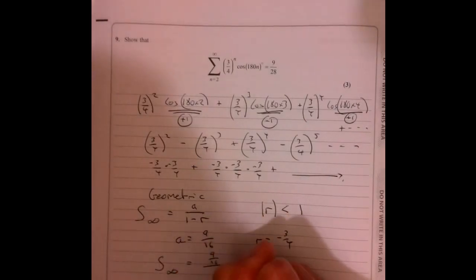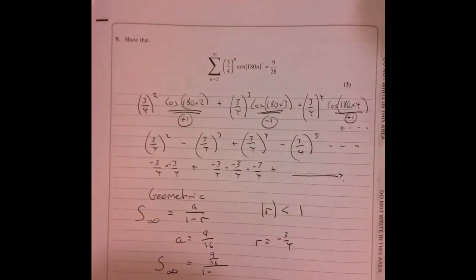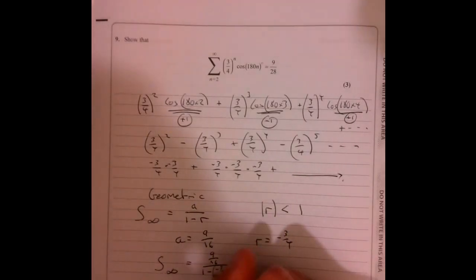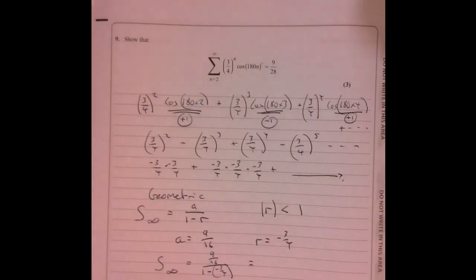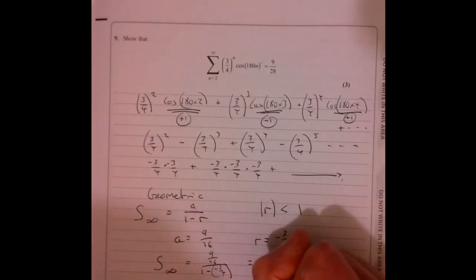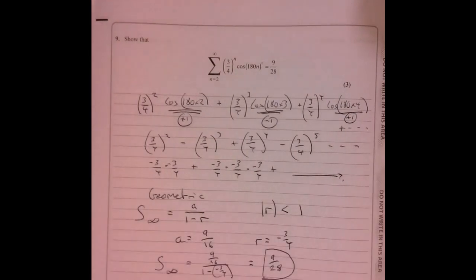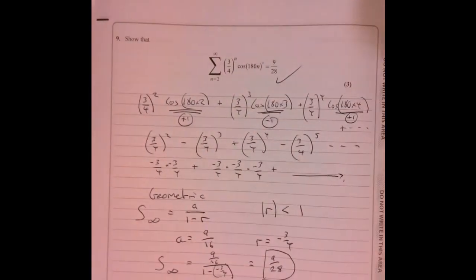And what have you got? Nine over sixteen, one take away minus three over four. And then pop that in, and then that gives you nine over twenty-eight, which is where we wanted.